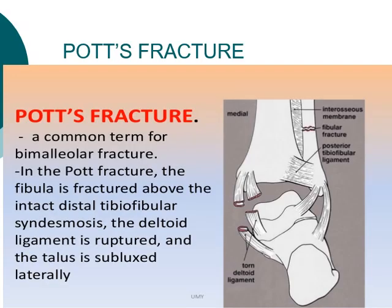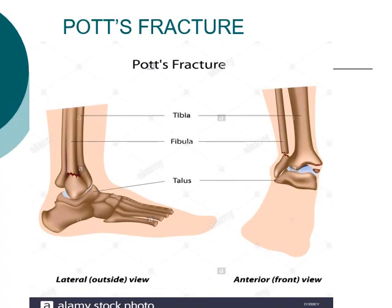The other type is Pott's fracture, where the ankle is broken at the fibula — specifically at the distal end of the fibula and the tibia bones. The fracture takes place where the tibia and fibula join to the ankle joint. This picture shows Pott's fracture with the fracture happening at the distal end of the tibia and fibula.